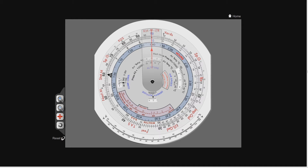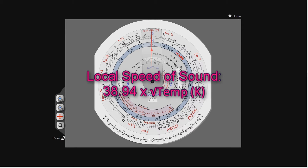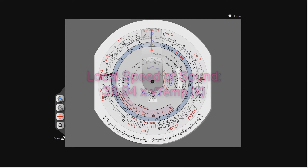The equation to calculate the local speed of sound is 38.94 — which is a constant — times the square root of the absolute temperature. So you take the temperature of the air in degrees Celsius, then add 273 degrees, which is the conversion between degrees Celsius and degrees Kelvin. You now have an absolute temperature in degrees Kelvin. Take the square root of that, then multiply by 38.94, and that gives you the speed of sound in knots. If you wish to use meters per second instead, you can change 38.94 to 20.01.